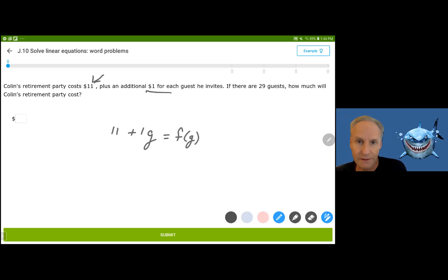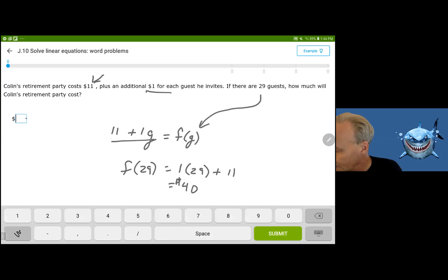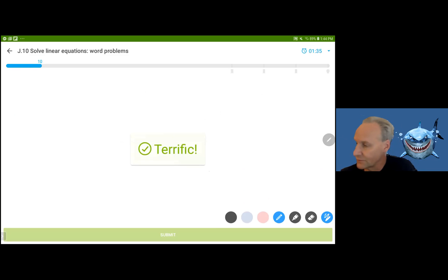What they want me to find is how much it costs for 29 guests. So the formal way of writing this is find F of 29 for this linear function. Each guest costs $1. That's the rate at which we're going to be charged per guest plus the original $11 makes a total of $40 for the retirement party. And that's what we're going to put in. Probably over-taught, but that's okay. All right, let's look at the next one.